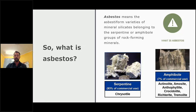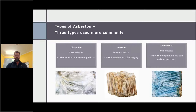Three types of asbestos were more commonly used: chrysotile, which is the white asbestos — found mainly in asbestos cloth and cement products. Amosite, which is the brown asbestos — used in heat insulation and pipe lagging. And crocidolite, which is the blue asbestos — very high temperature and acid resistant.